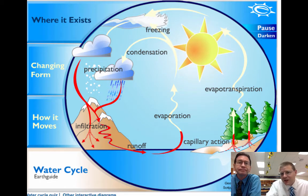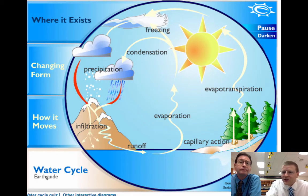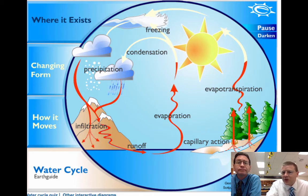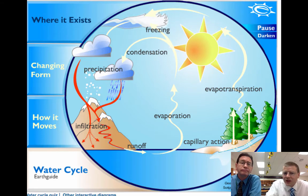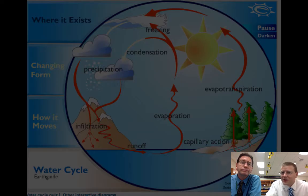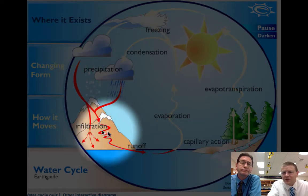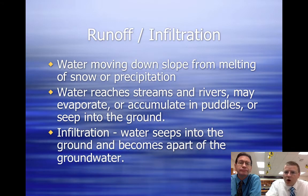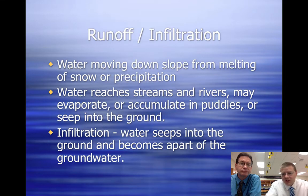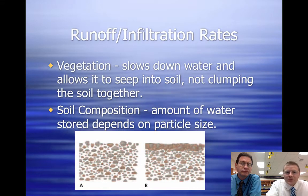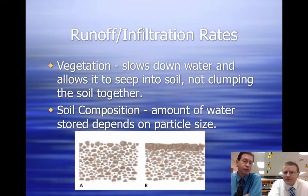Precipitation is when the water just gets too dense and starts to fall. The main thing we want to focus on now, instead of runoff like we did last unit with rivers and streams, is infiltration. All water always flows downhill from snow, rain, any form of precipitation. But the water that actually seeps into the ground infiltrates and becomes part of groundwater. Runoff rates will vary depending on what's on the surface, which means the water seeping into the ground will also vary depending on the surface.